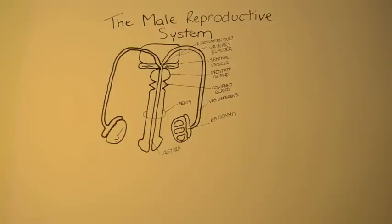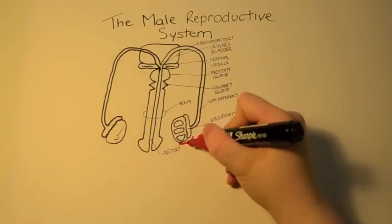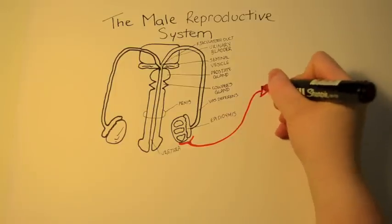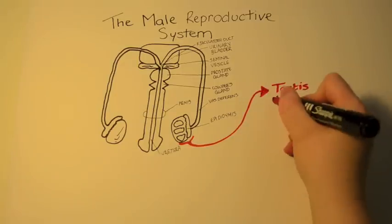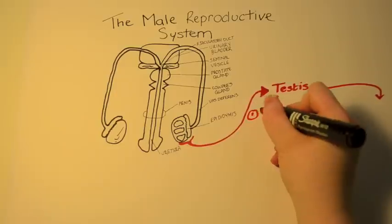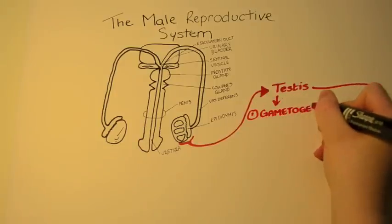The testes has two primary functions. These are gametogenesis, which is the production of a gamete, in this case sperm. And steroidogenesis, which is the production of steroids.